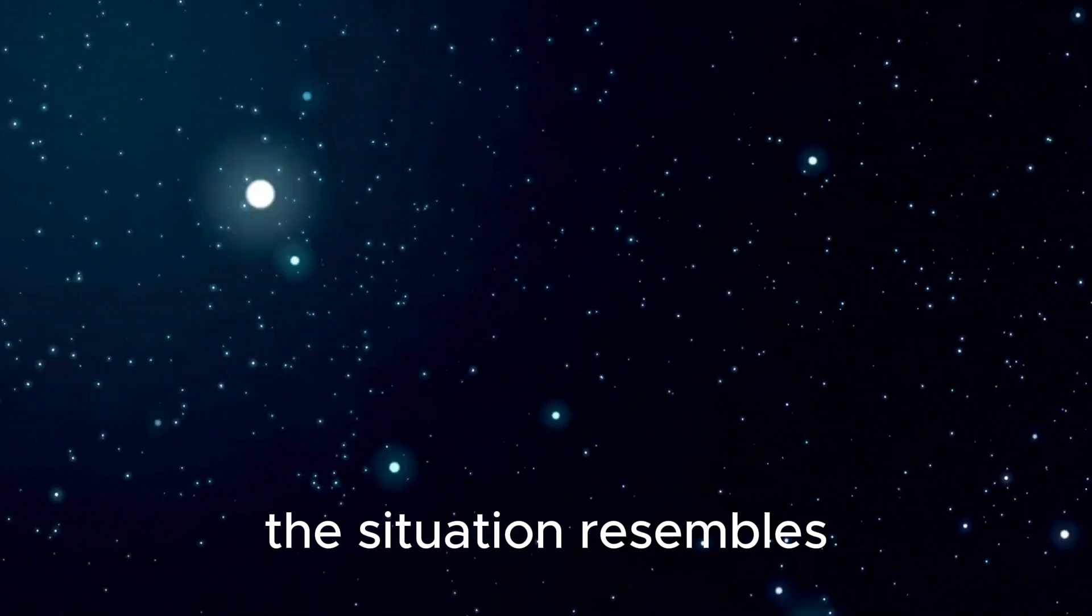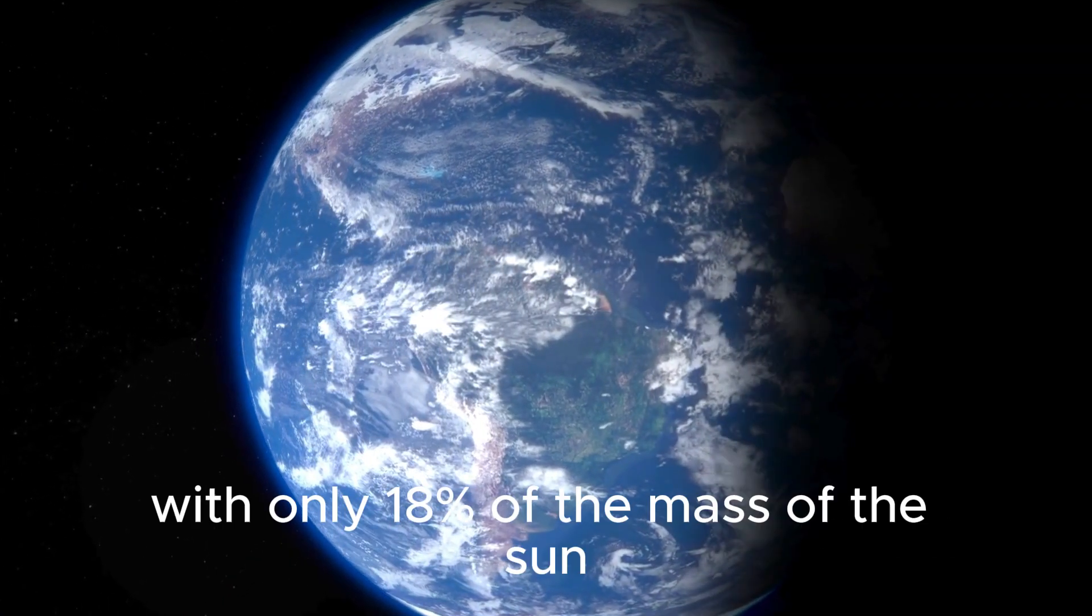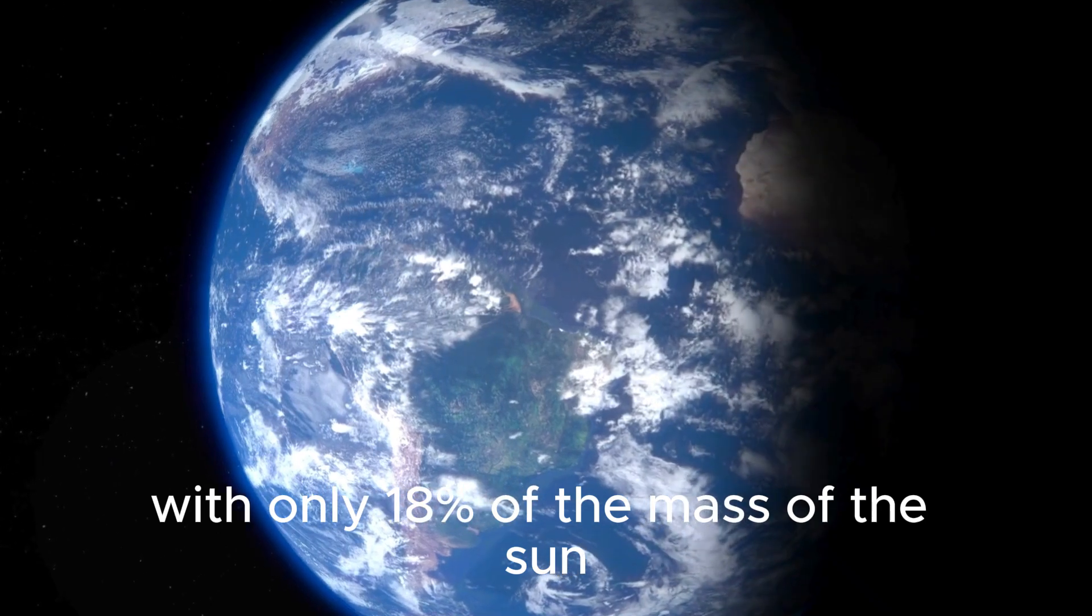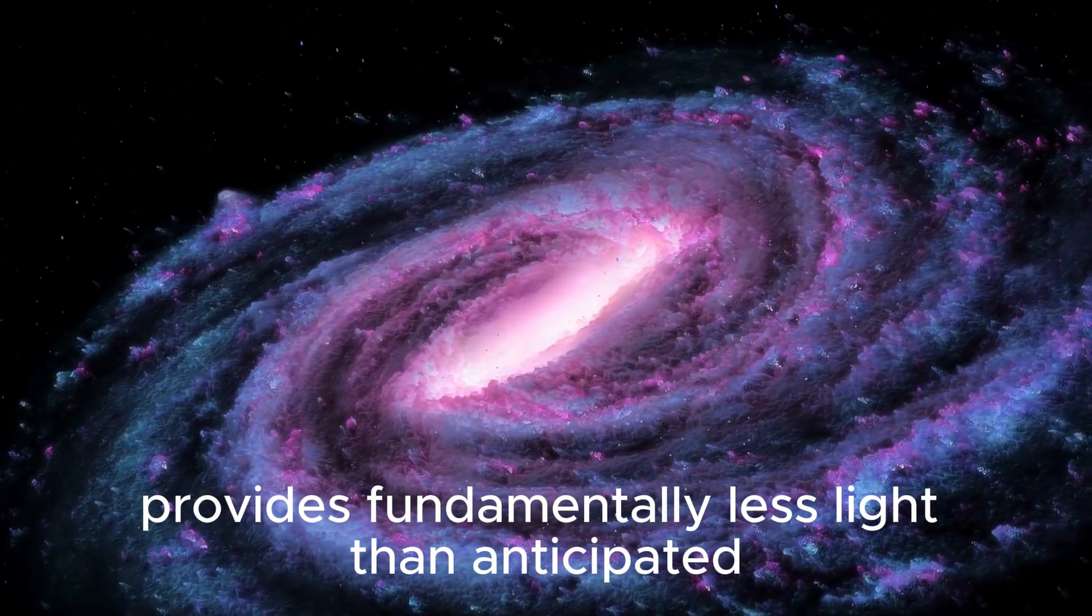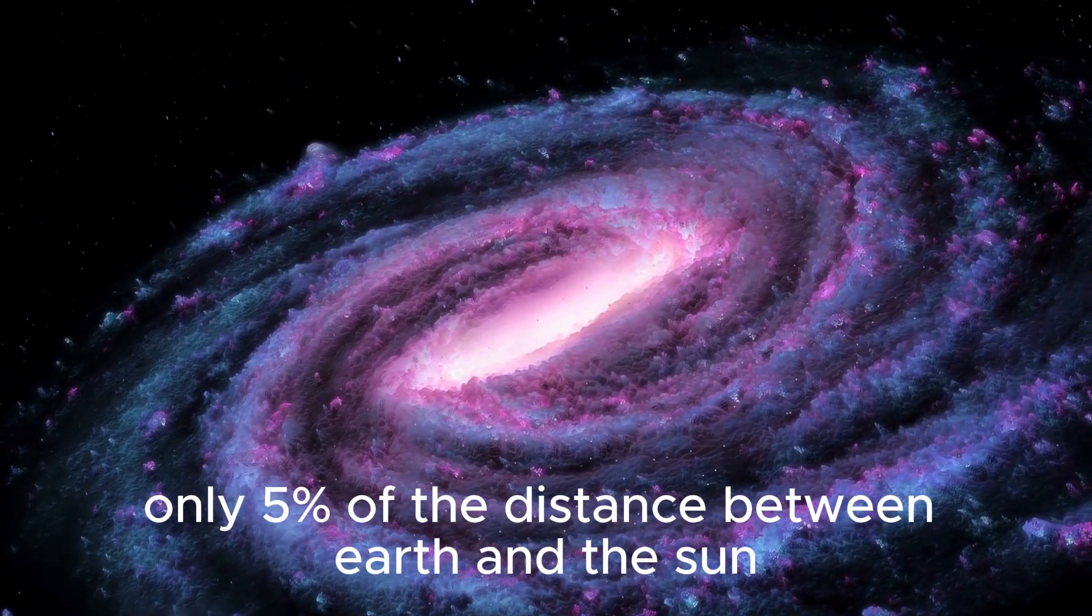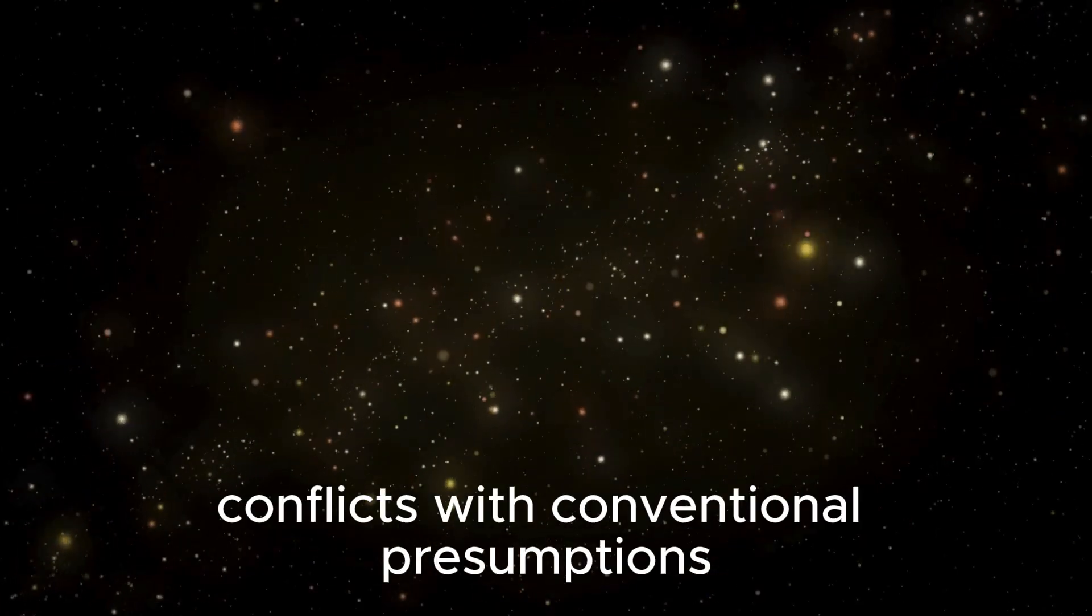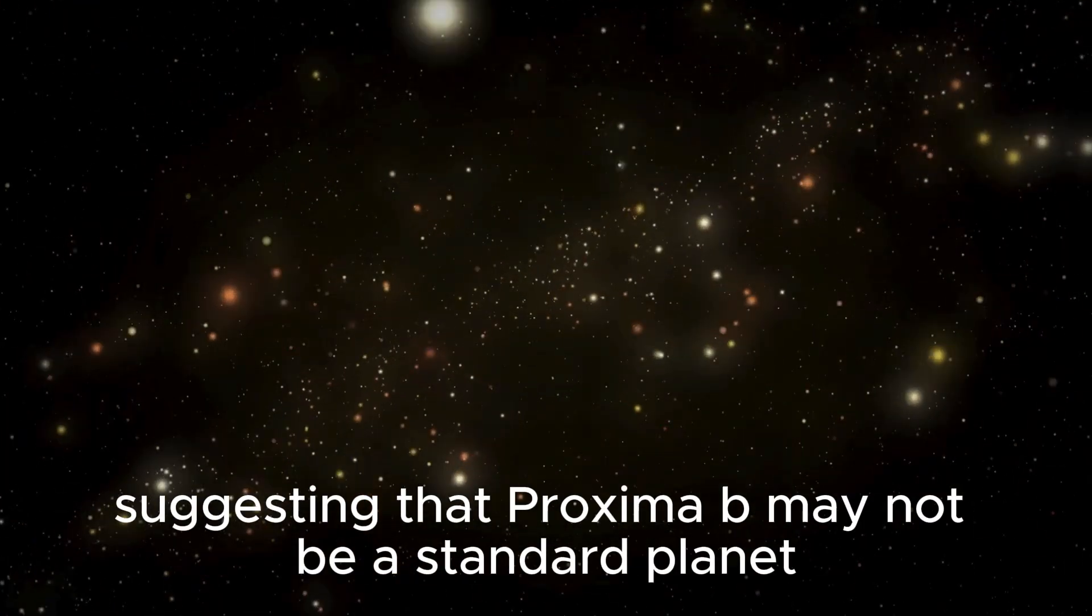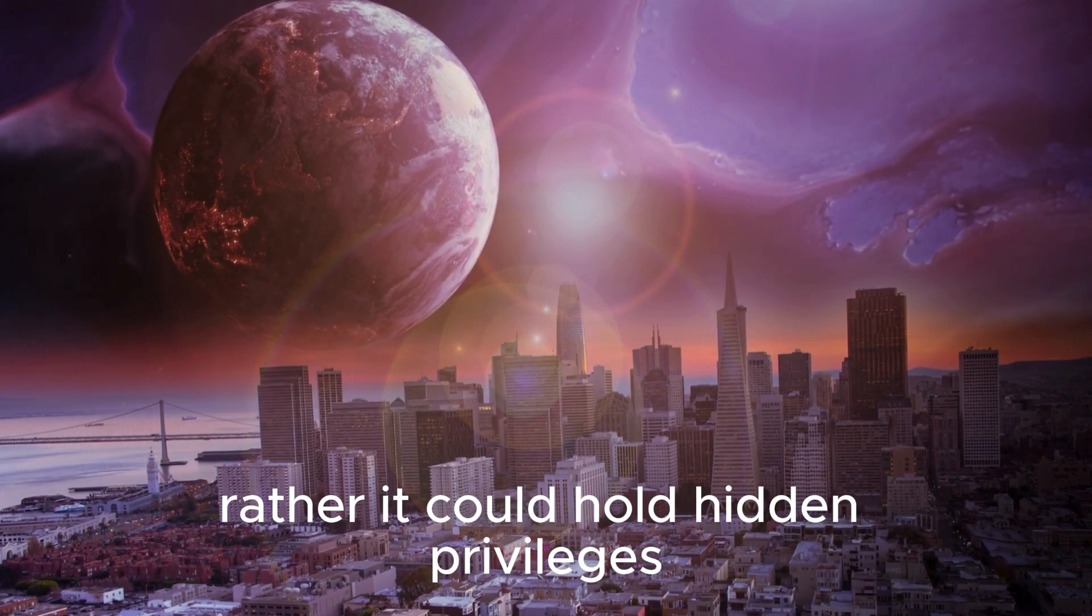The situation resembles the Moon's relationship with Earth in the planetary framework. With only 18% of the mass of the Sun, Proxima Centauri provides fundamentally less light than anticipated. Combined with its proximity to Proxima b, only 5% of the distance between Earth and the Sun, Proxima Centauri conflicts with conventional presumptions, suggesting that Proxima b may not be a standard planet. Rather, it could hold hidden privileges.